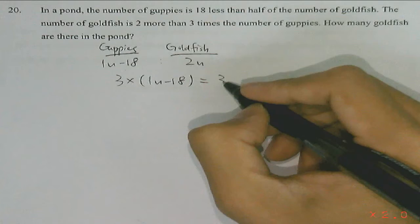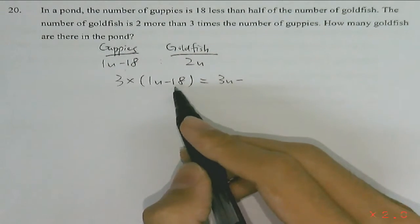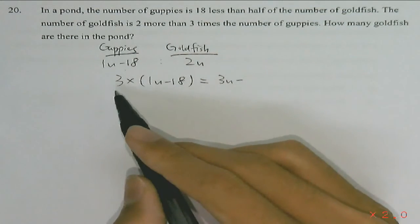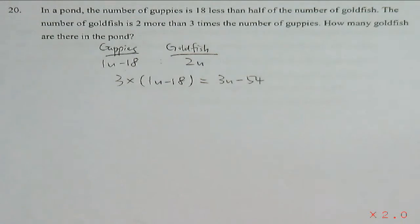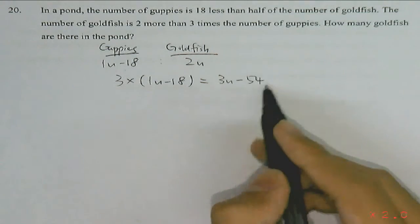There will be 1 unit times 3, we will have 3 units, and 18 times 3, we will have minus 54. So this is 3 times the number of guppies.